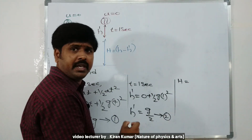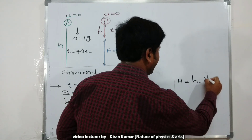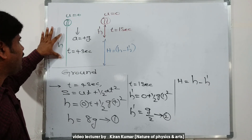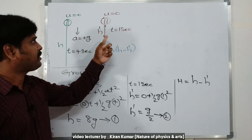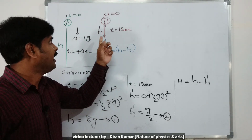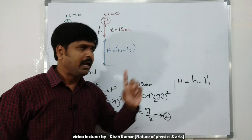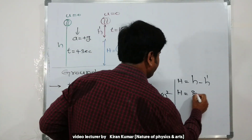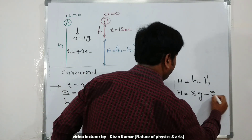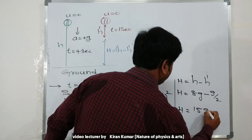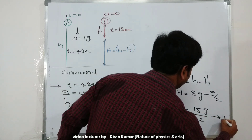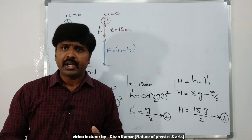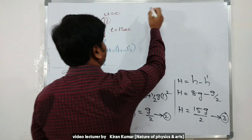Third, the remaining height capital H equals h minus h dash. Substituting: h equals 8g from equation one, and h dash equals g over two from equation two. So capital H equals 8g minus g over two, which gives H equal to 15g over two. This is taken as equation number three.